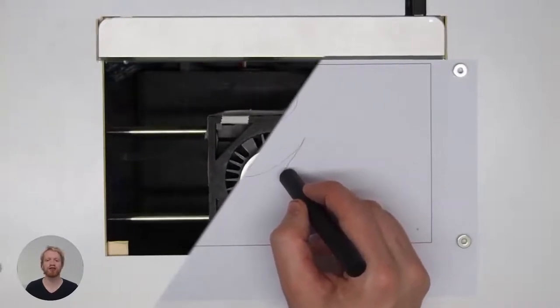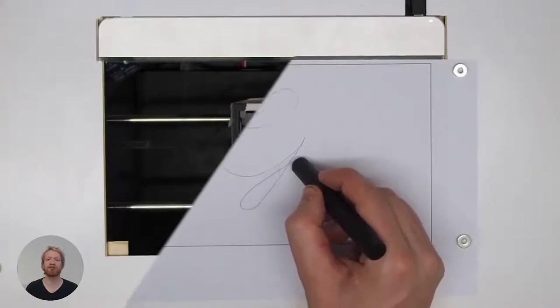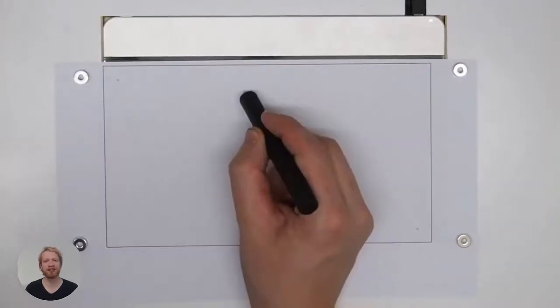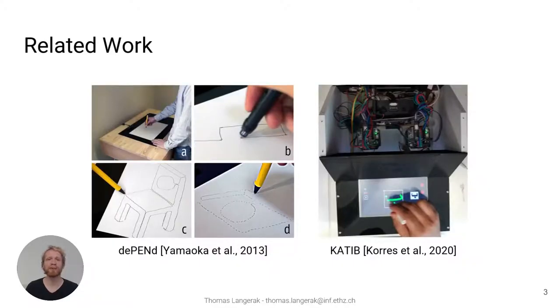Crucially, such systems aim to strike a balance between giving users a strong sense of control and agency. Previous magnet-based work such as dePENd relies on open-loop control, or like KATIB, one time dependent closed-loop control. These strategies force users to adapt to the system rather than the other way around.